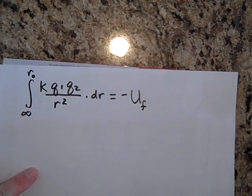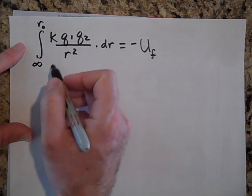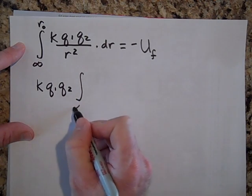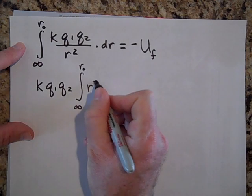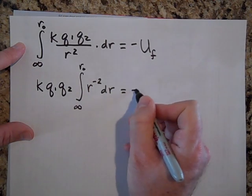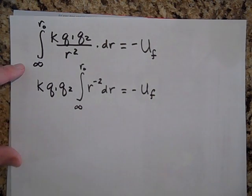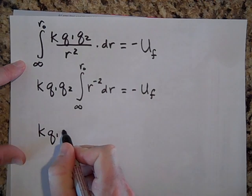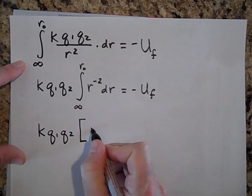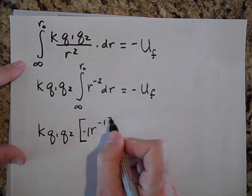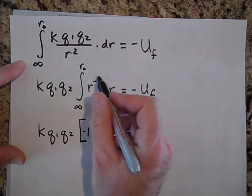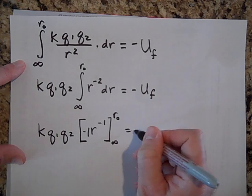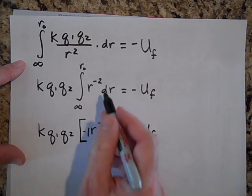Let's calculate that integral. The constants K, Q1, Q2 can be pulled out, leaving the integral from infinity to R0 of R to the negative 2 dr, which equals negative U final. The value of that integral is K Q1 Q2 times R to the negative 1, evaluated with a factor of negative 1, from infinity to R0, equal to negative U final. You can verify by taking the derivative — you get R to the negative 2, confirming the integrand.